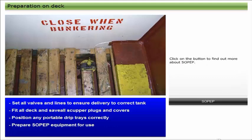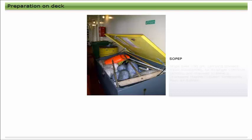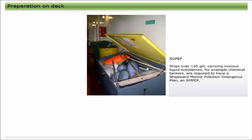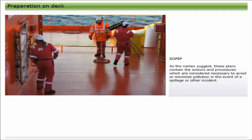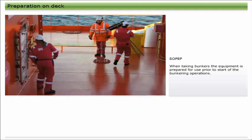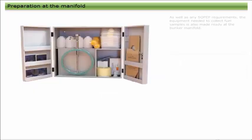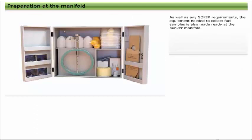All oil tankers over 150 gross registered tons and other ships over 400 gross registered tons are required to have a Shipboard Oil Pollution Emergency Plan (SOPEP). Ships over 150 gross registered tons carrying noxious liquid substances, such as chemical tankers, are required to have a Shipboard Marine Pollution Emergency Plan. These plans contain the actions and procedures considered necessary to avoid or minimize pollution in the event of a spillage or other incident. The equipment necessary to achieve this should be stored in a separate locker clearly marked for this purpose. When taking bunkers, the SOPEP equipment is prepared for use prior to start of bunkering operations, and the equipment needed to collect fuel samples is also made ready at the bunker manifold.